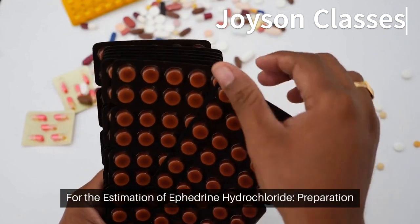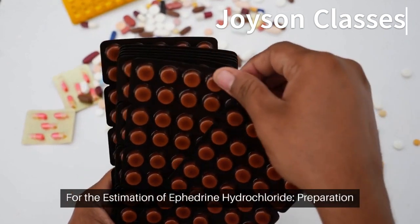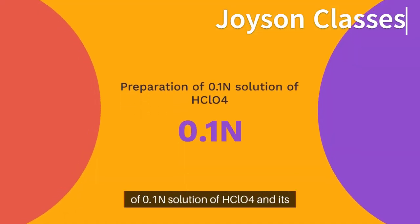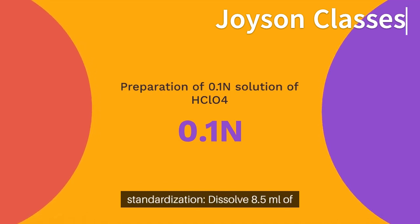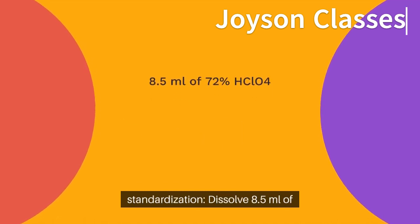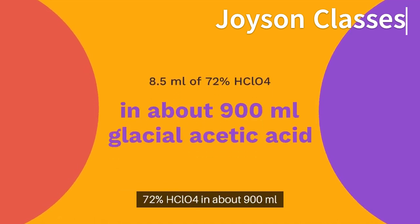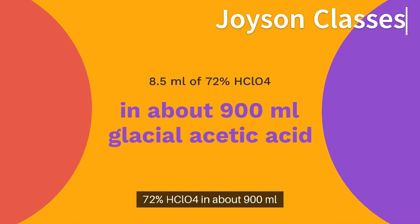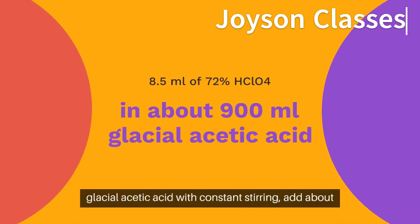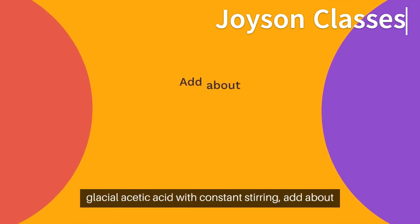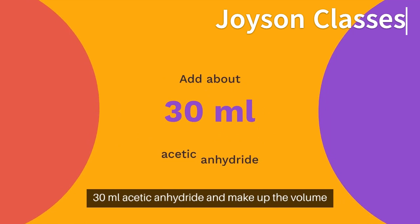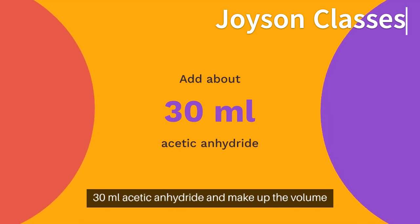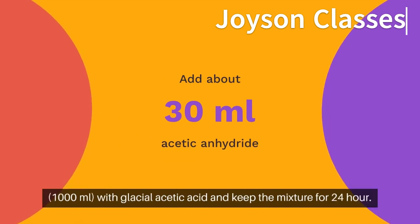For the estimation of ephedrine hydrochloride, preparation of 0.1N solution of HClO4 and its standardization: dissolve 8.5 mL of 72% HClO4 in about 900 mL glacial acetic acid with constant stirring, add about 30 mL acetic anhydride and make up the volume to 1,000 mL with glacial acetic acid, and keep the mixture for 24 hours.